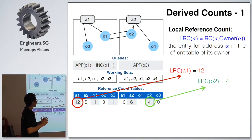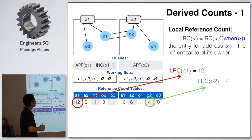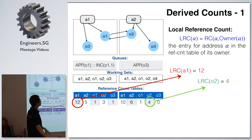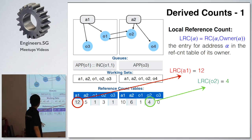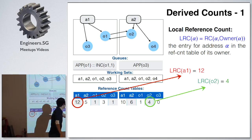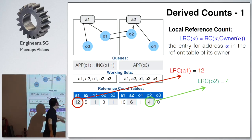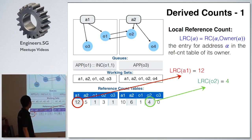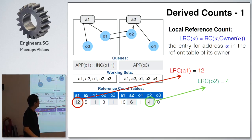To define the conditions of the invariants, we need a few terms. The first is the local reference count (LRC). That's the value in the count table of the owner of the object. For example, O2's owner is A2, so the LRC for O2 is four. By default, the actor is its own owner, so the reference count of A1 is 12.